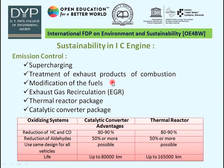For sustainability in IC engines, emission must be controlled using different methods such as supercharging, treatment of exhaust products of combustion, modification of fuel or use of alternate fuel, EGR (Exhaust Gas Recirculation), Thermal Reactor Package, and Catalytic Converter Package. With the help of a catalytic converter, we can reduce CO and HC by 50 to 90%.